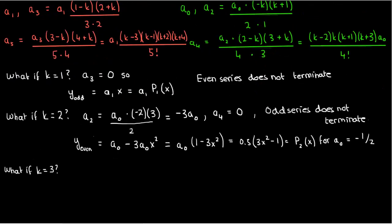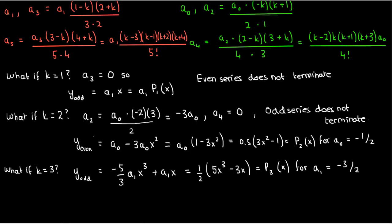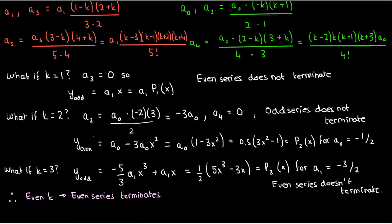For k equals 3, the odd series terminates giving a₁x minus (5/3)a₁x³, which becomes (1/2)(5x³ minus 3x) when a₁ equals negative 3/2, labeled as P₃(x). The even series for this odd k doesn't terminate. We can repeat this for k equals 4, 5, 6, and so on — for even k the even series terminates, for odd k the odd series terminates, always producing a polynomial whose highest power matches k.